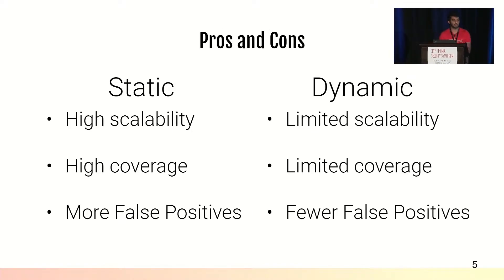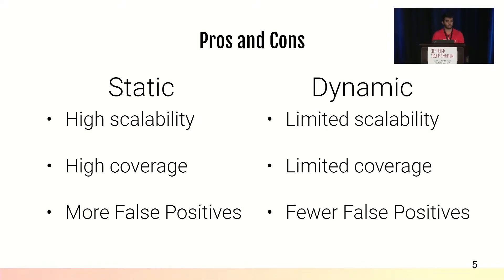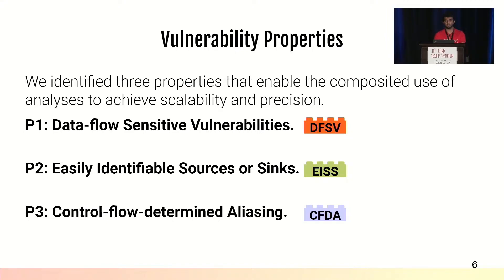Going back to the two types of analysis — static and dynamic — static analysis provides high scalability and high coverage, but unfortunately suffers from a high number of false positives. Dynamic analysis does not scale as well or gain as much coverage, but it has significantly fewer false positives. We'd like to combine these two analyses to get the best of both worlds. To do that, we identify three properties common to many commonly found vulnerabilities that enable us to combine analyses to gain scalability and precision.